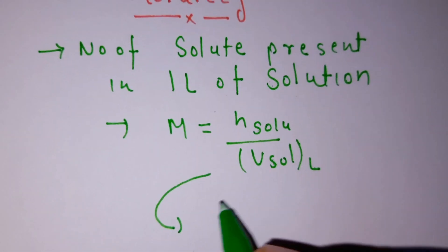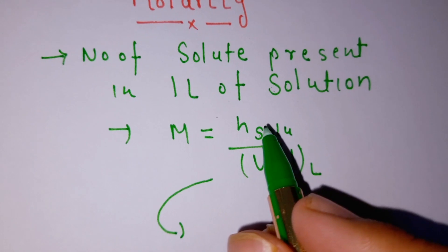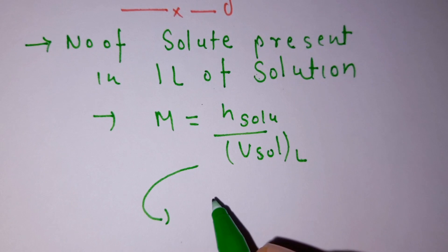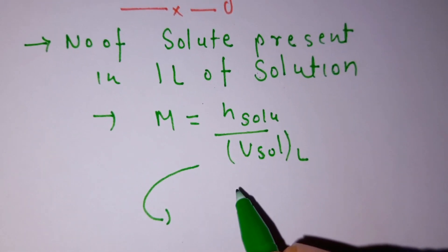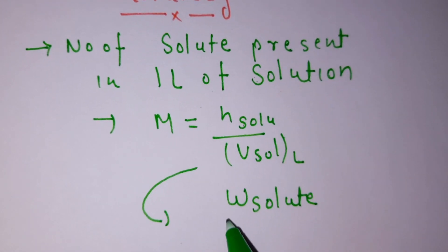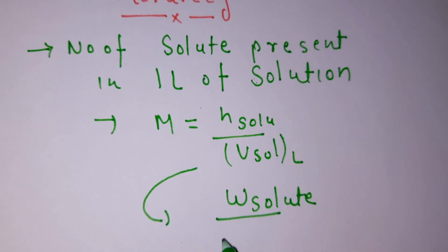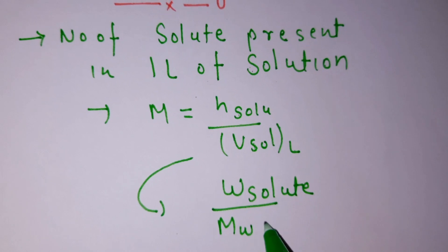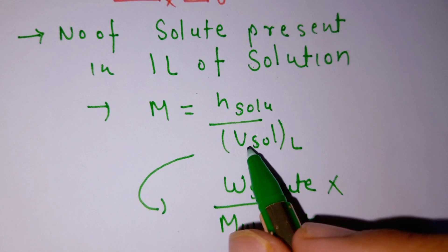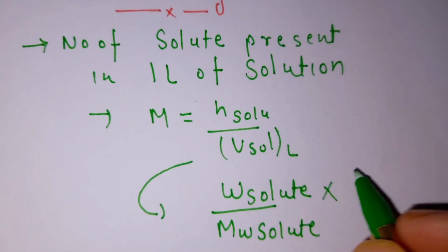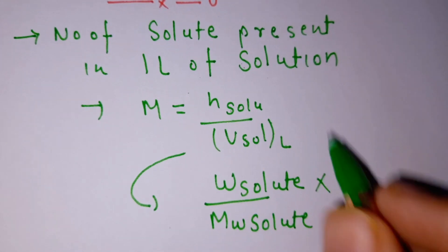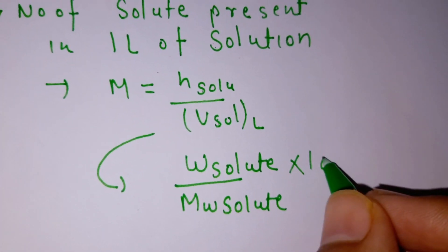Then number of solute, find how we find number of solute: weight of solute divided by molecular weight of solute, into volume in liter. When we change volume from liter into ml, then divide by thousand. Then thousand goes up, one thousand over volume in ml.